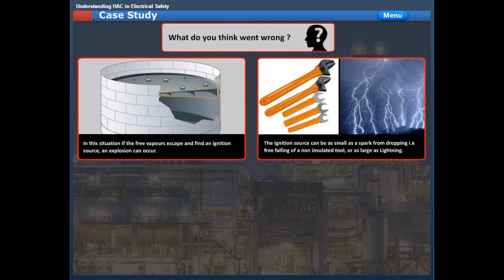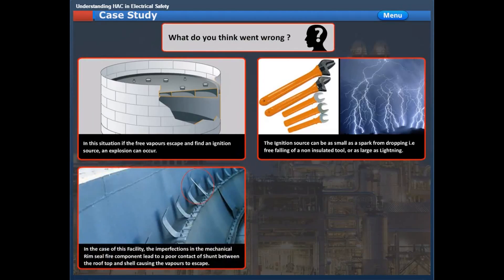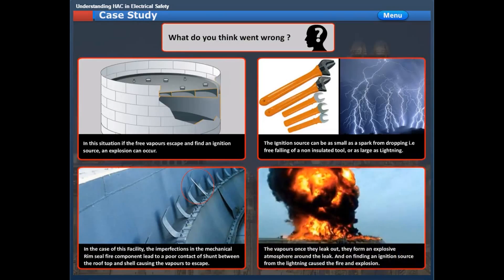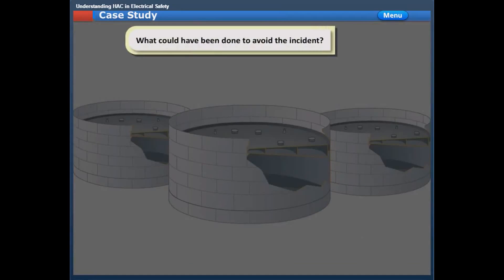The ignition source can be as small as a spark from the free falling of a non-insulated tube. In the case of this facility, the imperfections in the mechanical rim seal fire component led to poor contact of the shunt between the rooftop and shell, causing the vapors to escape. The vapors, once they leaked out, formed an explosive atmosphere around the leak, and on finding an ignition source from the lightning, caused the fire and explosion. What could have been done to avoid the incident?